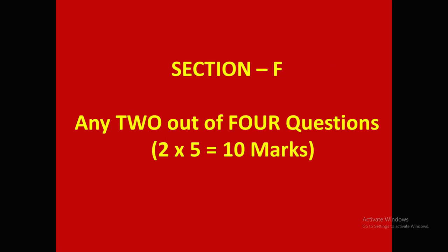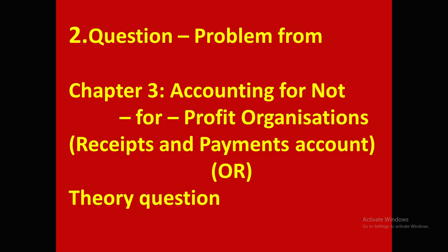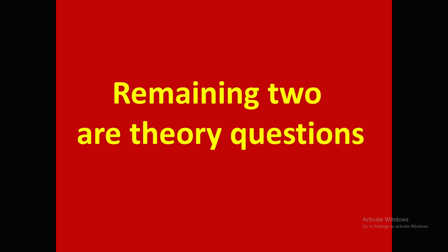Next, Section F: four questions will be given; you have to write any two. Each one carries 5 marks — 2 into 5 = 10 marks. Out of these four questions, one question is a problem from Chapter 1, that is Depreciation. The second question may be a problem or theory question; if a problem, there is a chance it comes from Chapter 3, Accounting for Not-for-Profit Organizations, on Receipts and Payments. He may give one 5-mark question or a theory question. The remaining two are theory questions.